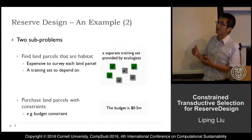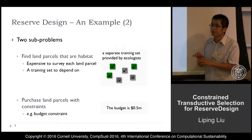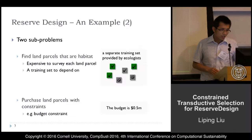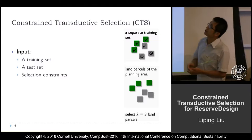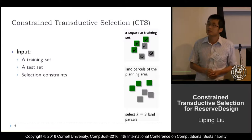This problem can be solved by a very basic two-step method: run a species distribution model to estimate the labels for the land parcels in the planning area, and then optimize the selection of land parcels. In our work, we would like to propose a new formulation — constraint transductive selection — for this problem. We want to put the two sub-problems into one to optimize the selection of land parcels directly.